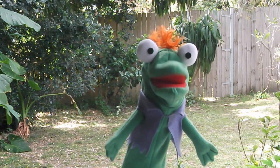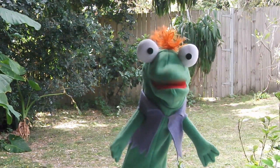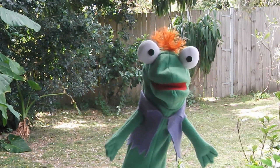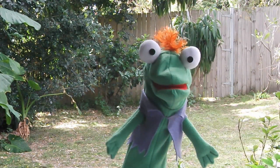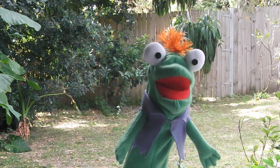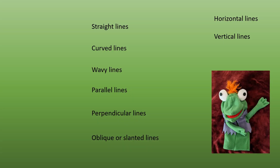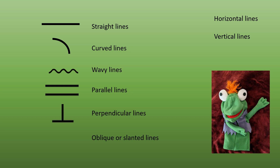Yes, P.T. Lines can be confusing. On the road, they tell us where we can drive or cross or turn or park our cars. In math, there are all kinds of lines and words we use to describe them: straight, curved, wavy, parallel, perpendicular, oblique or slanted lines, horizontal and vertical lines.